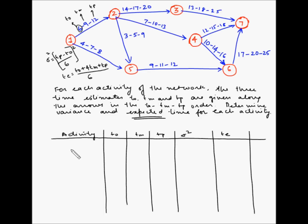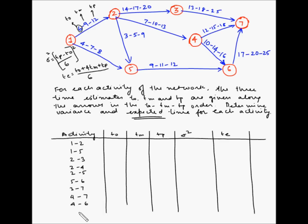Let's list down the activities: 1-2, 1-5, 2-3, 2-4, 2-5, 5-6, 4-6, 3-7, 4-7, 4-6, and 6-7. Now let's note down the three time estimates. For activity 1-2, the optimistic time to is 6, tm is 9, and tp is 12.